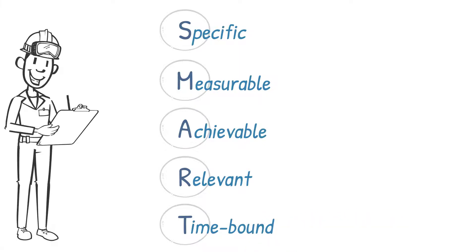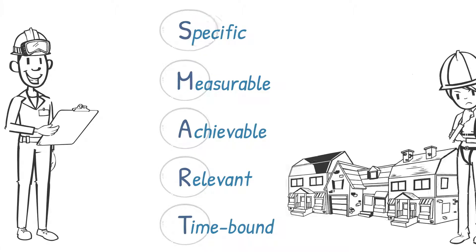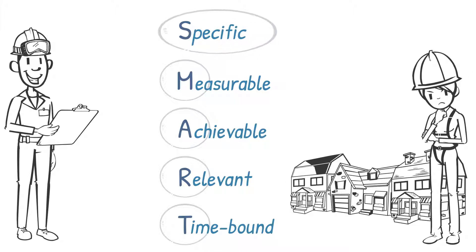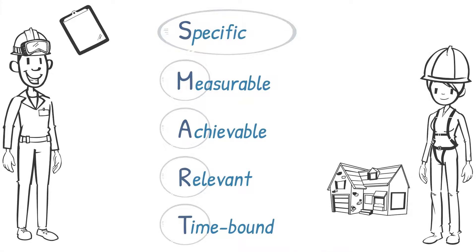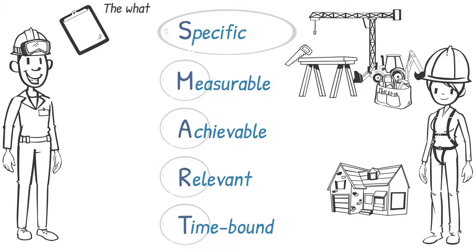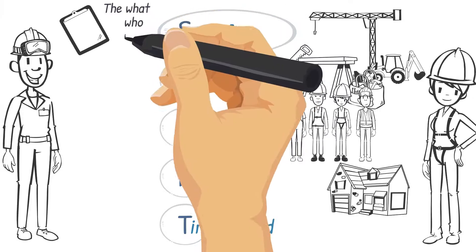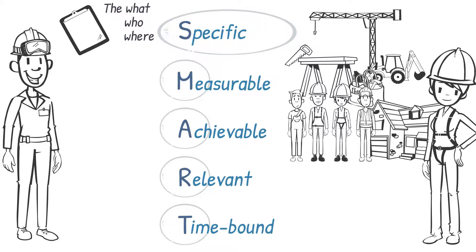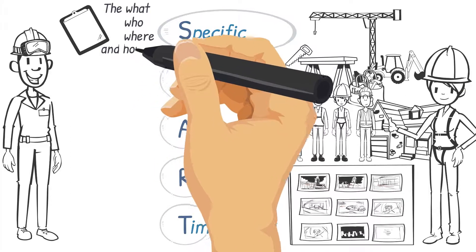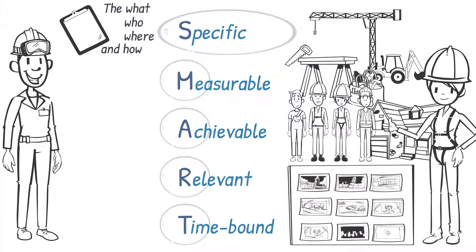The focus of SMART targets is usually on the person setting the objective. You should set a clear and specific task to focus effort, defining precisely what is to be accomplished. Include details of which resources are available, who will be involved, and where the work will be located. If the method of delivery needs to be controlled, you should also specify how the task is expected to be undertaken.